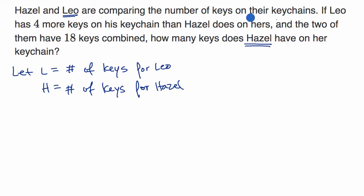Let's see how we can set up these two constraints as equations. If Leo has four more keys than Hazel does, how could we write that mathematically? We could write that L equals the number Hazel has plus four. So L = H + 4.